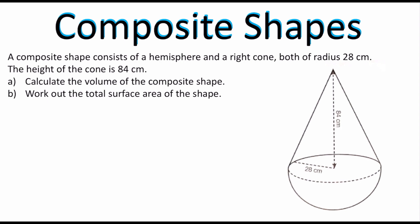So there's two things that we have to do. The first one is the volume. So we need to organize our thoughts. Let's go ahead and say that we want to find the volume of the cone and we're going to add that to the volume of the hemisphere.